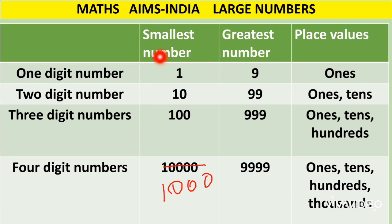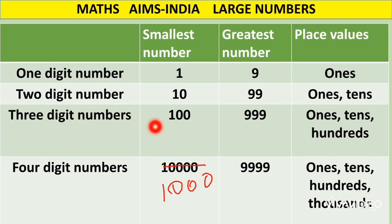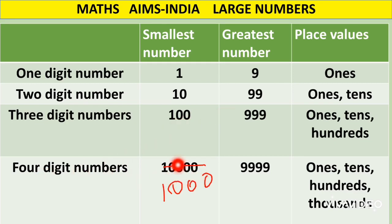Coming to the smallest numbers, they have one on the first place from the left and the remaining places are filled with zeros. For a three digit number, we place one in the first place and fill the remaining two places with zeros. In the same way, for a four digit number, we write one in the first place and zeros in the remaining three places.